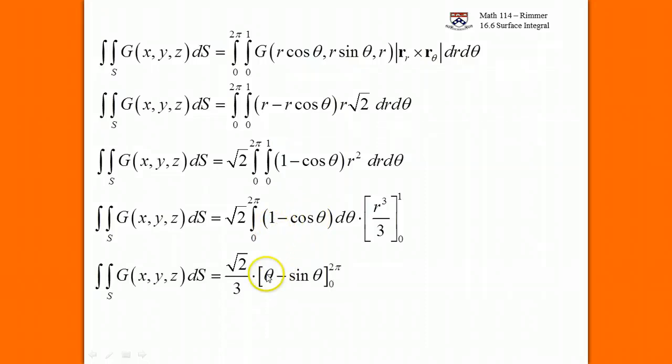If we say it as theta minus sine theta, when we put the 2π in, this part gets 0. When we put the 0 in, this part gets 0. So we just end up with root 2 over 3, multiplied by the 2π. That's our final answer for the surface integral.